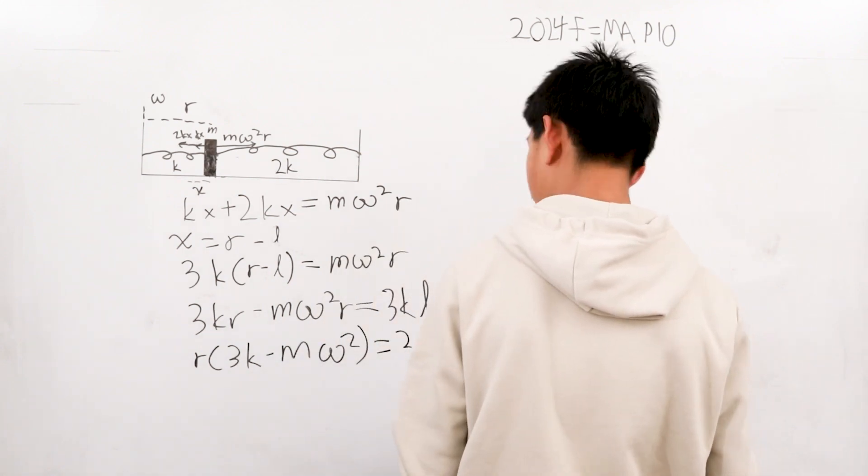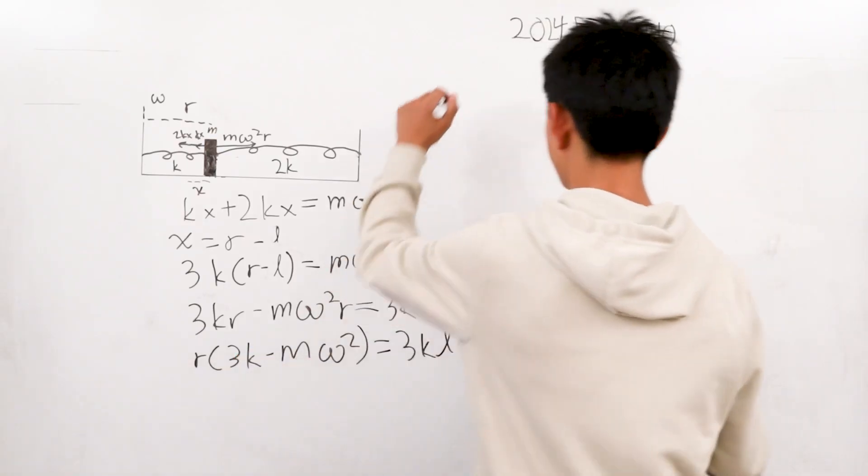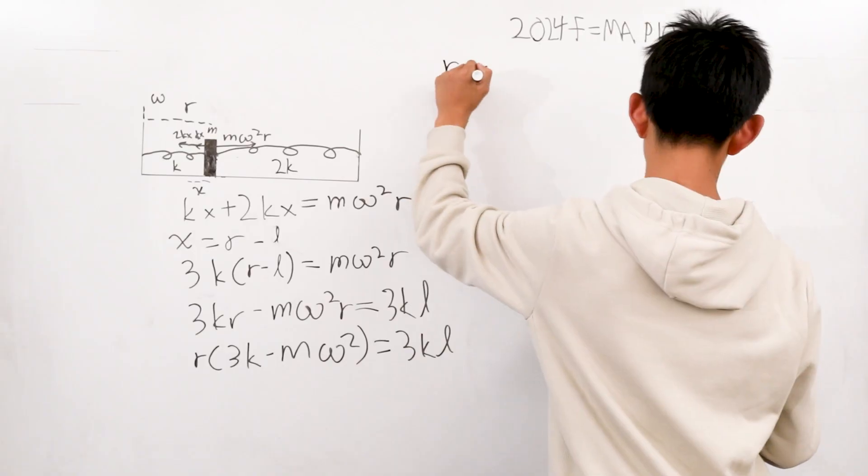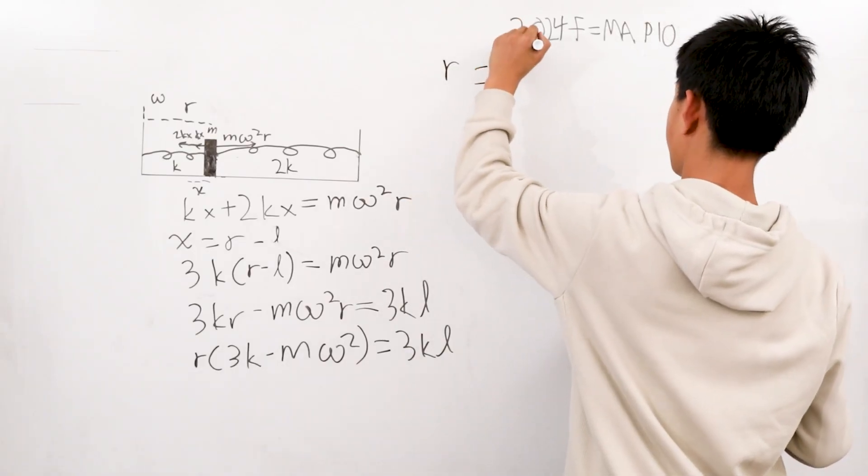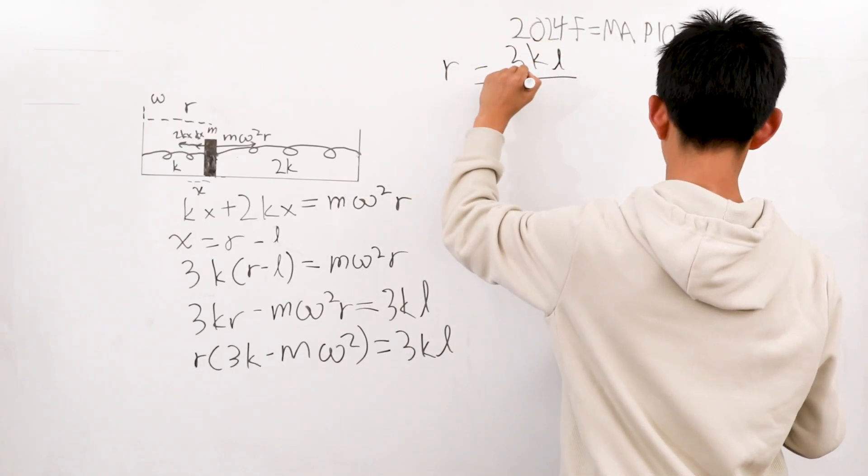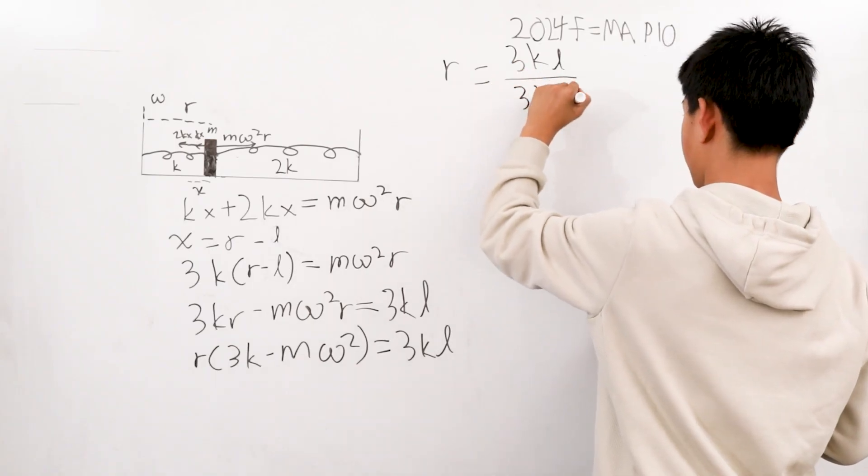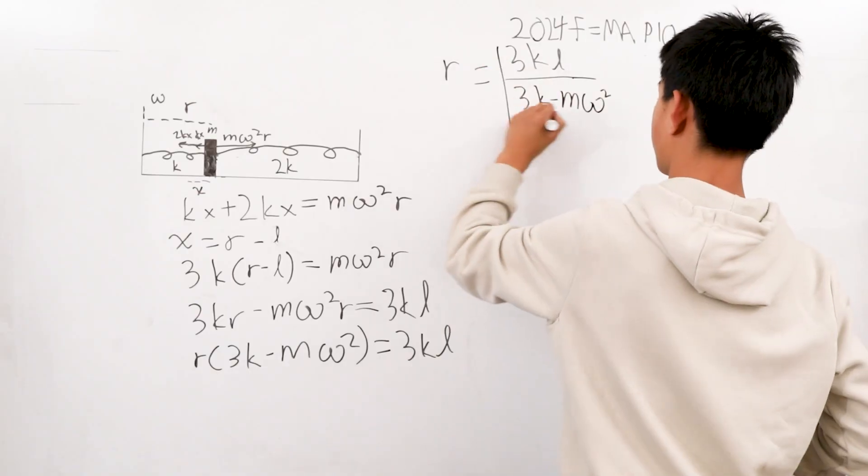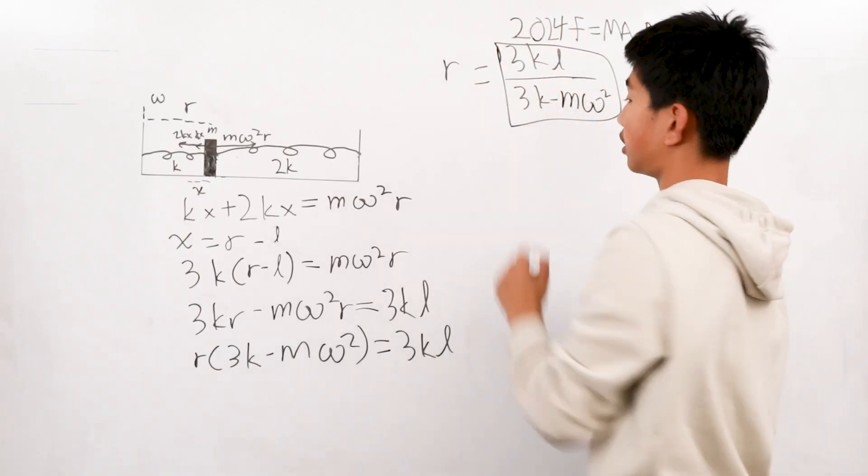Therefore, solving for R, we divide both sides by this. We get that R is equal to our answer of 3KL over 3K minus M omega squared, which on the test is answer choice D.